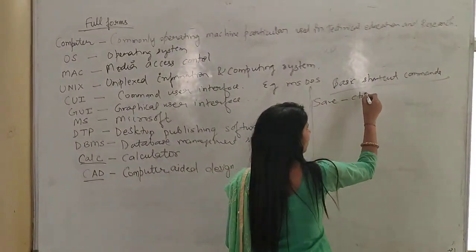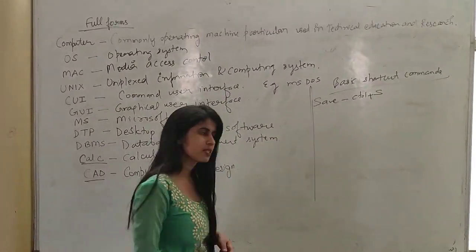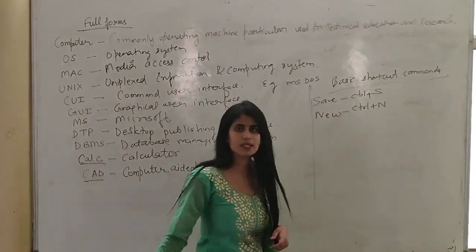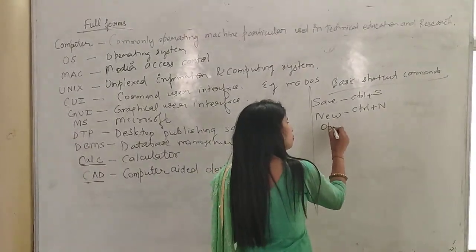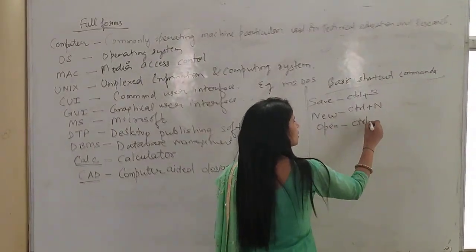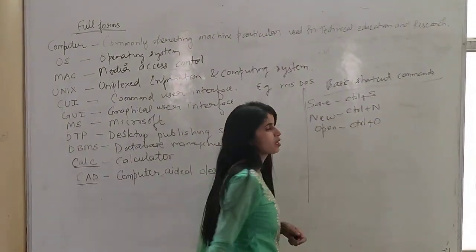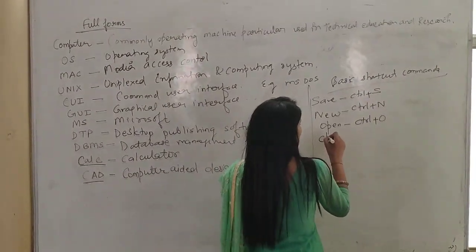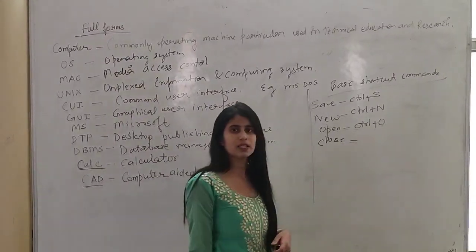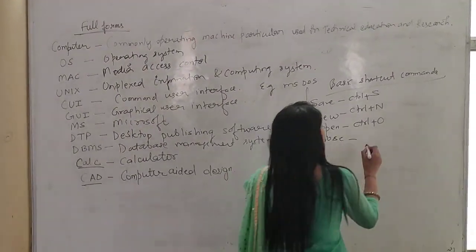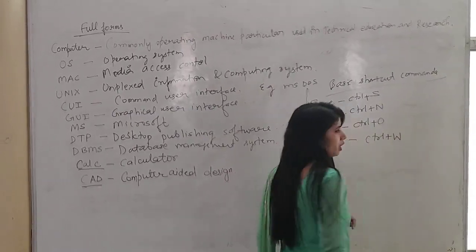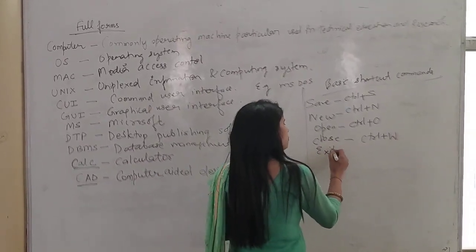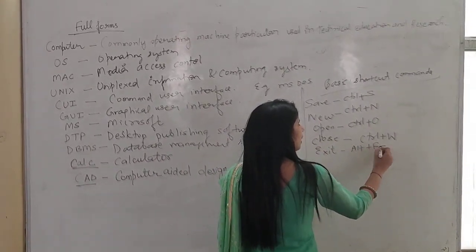First is Save — to save any file, we use Control+S. To make a new file, we use Control+N. To open an existing file, use Control+O. If you have to close a document, you will use the key Control+W. If you want to exit from any program window, you will use Alt+F4.